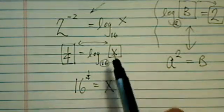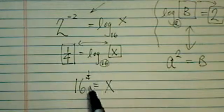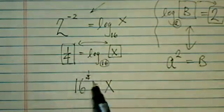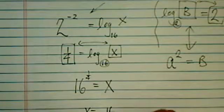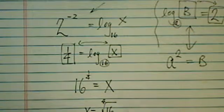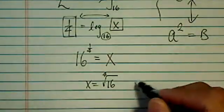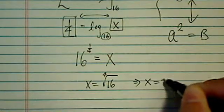So basically keep the same base and swap the two boxes. So 16 to the quarter is equal to X, which means X is equal to the fourth root of 16, which means X is equal to 2.